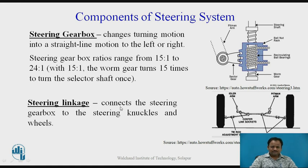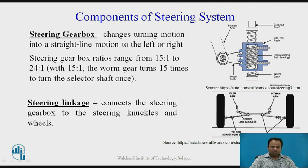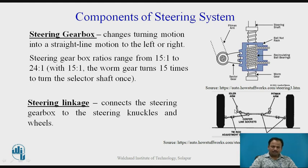Steering linkage connects the steering gearbox to the steering knuckles and wheels. There is an idler arm and a Pitman arm, and between them a center link — also called a relay rod — is connected. To the relay rod, the tie rod is connected, and the tie rod is connected to the short arm, which is pivoted to the wheel hub. Whenever the steering wheel rotates, these linkages help rotate the wheels in the desired direction.